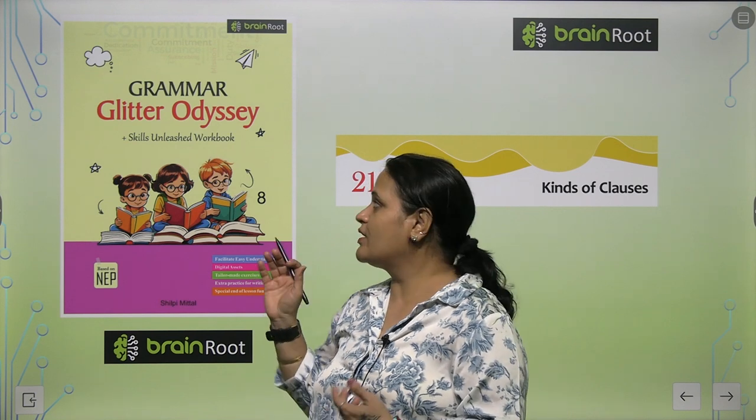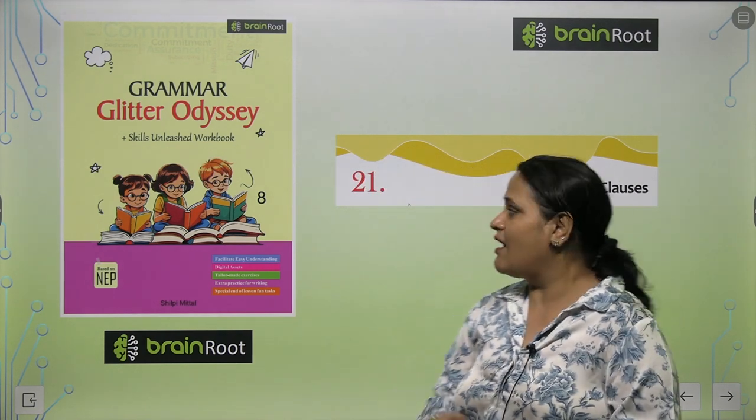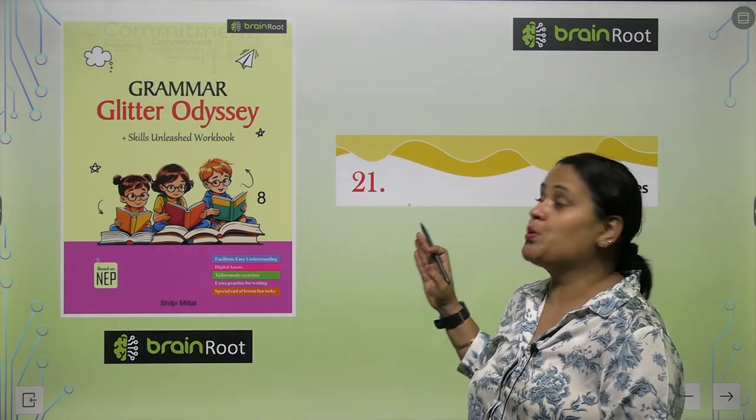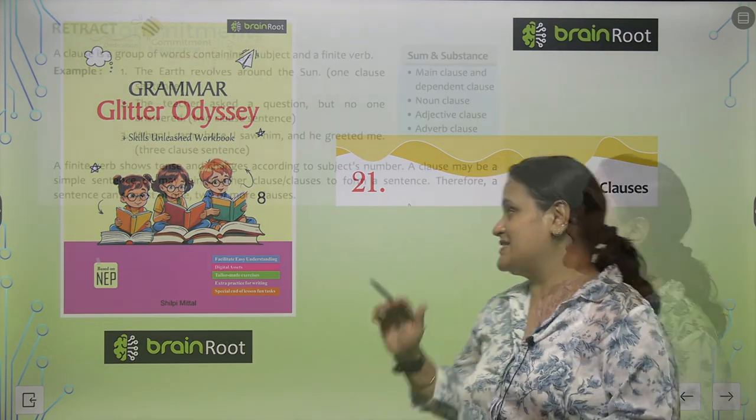Hello children, how are you all? Again, we are here with your book Grammar Glitter Odyssey by Brain Roots from Amit Publishing House and we are on chapter number 21, Kinds of Clauses.